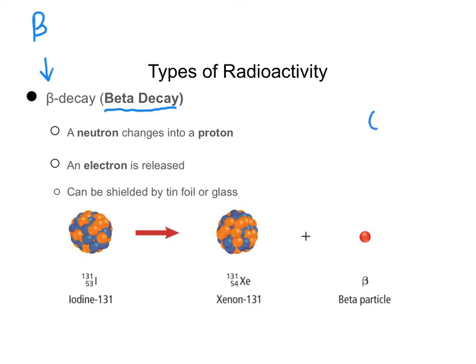In an equation, the beta particle looks like this: zero negative-one E — it's an electron with a negative one charge that gets kicked off. In the example, iodine-131 undergoes decay and breaks off into xenon. Notice the atomic number changed from 53 to 54 — it became a new atom — and the beta particle, written as zero negative-one E, gets released.